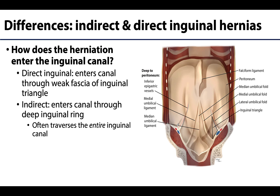To be more specific, the deep inguinal ring — the entryway to the inguinal canal — is just lateral to the inferior epigastric vasculature. An indirect inguinal herniation will enter the inguinal canal through the deep inguinal ring, often traversing the entire inguinal canal and sometimes extending beyond it.